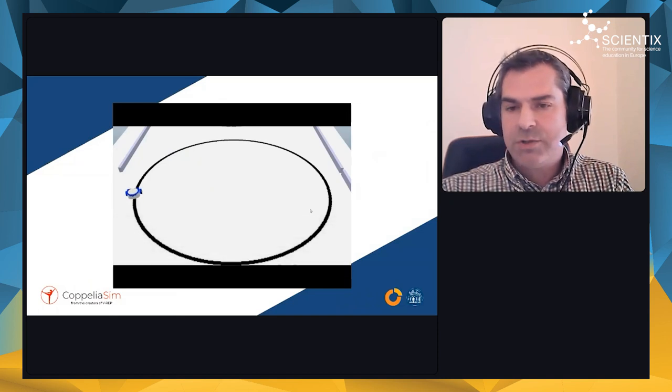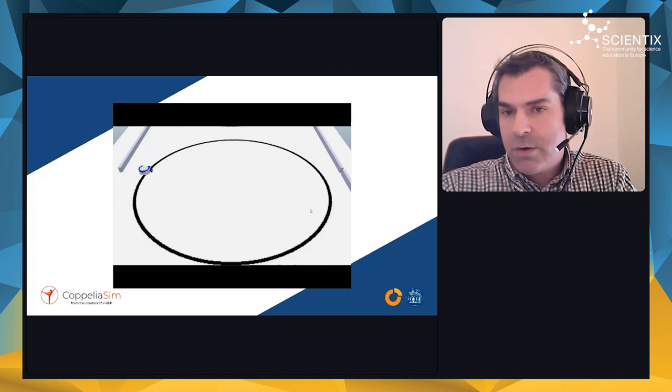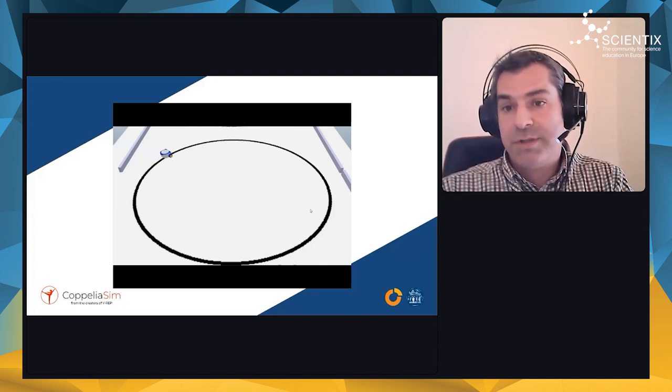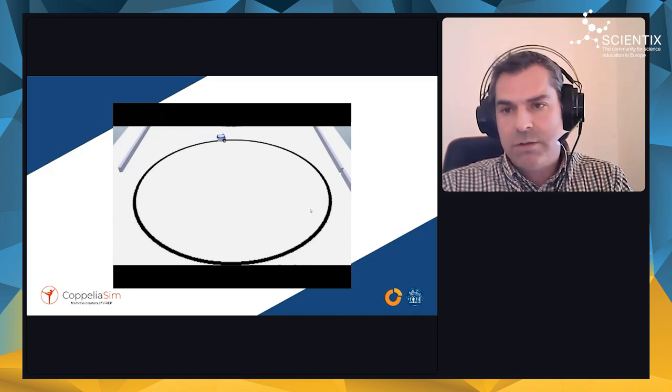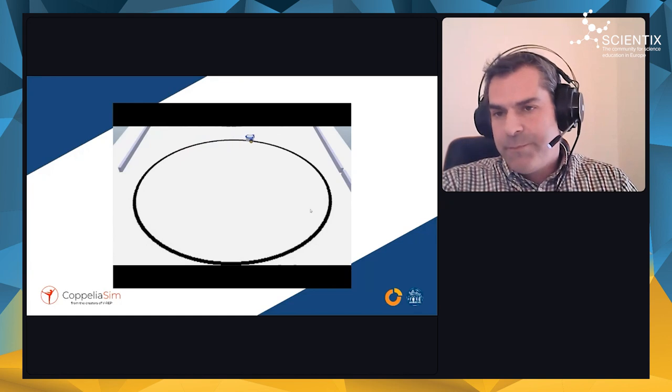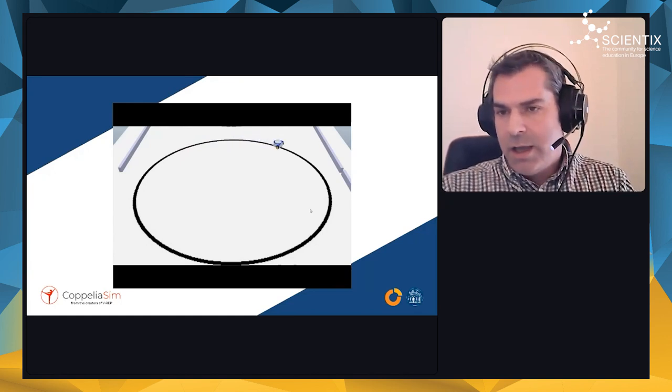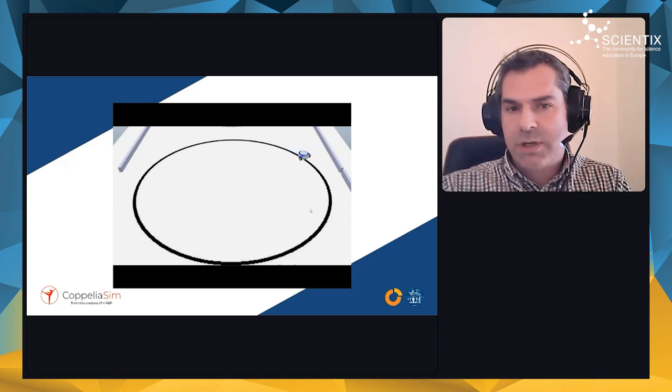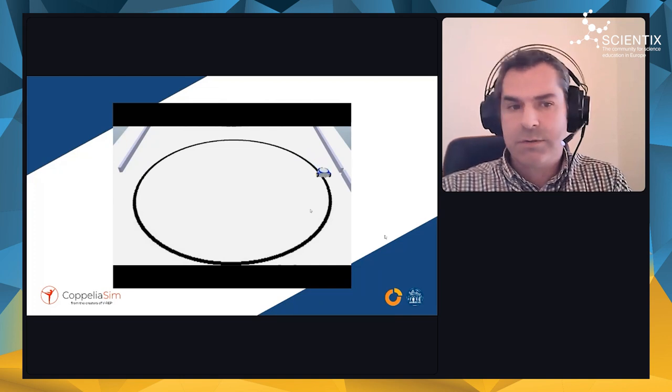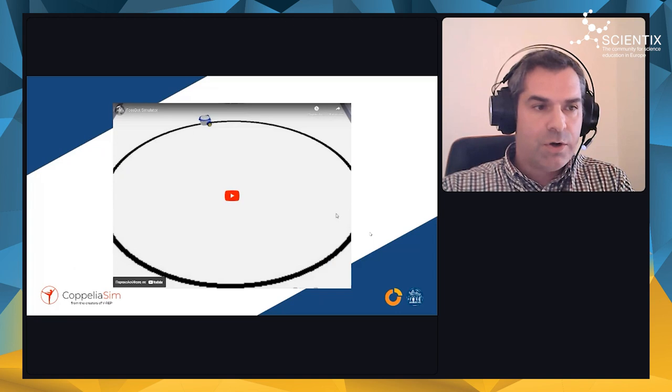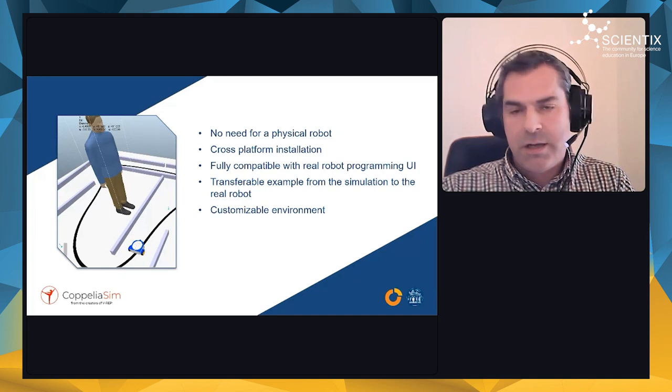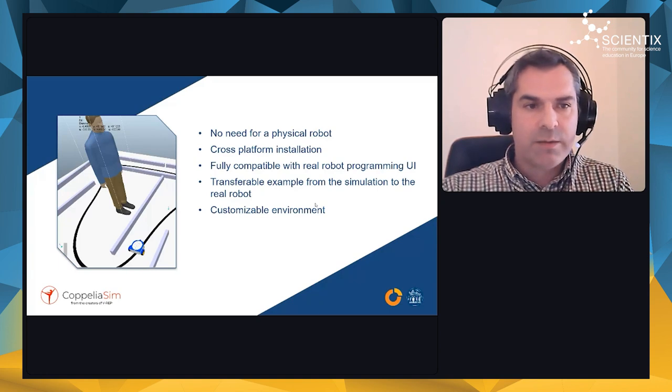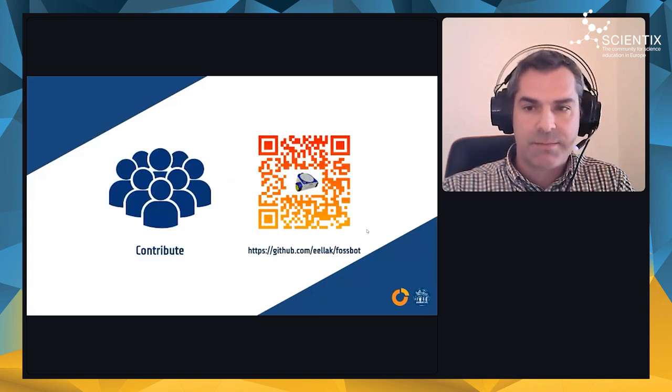This is the same thing but inside the simulator—the line following that we developed with the real robot executed here in the simulation environment. This is a good thing because with a simulator, someone that does not have the ability to print or assemble the robot can work on the simulator and when they are ready they can proceed with building the actual robot, or we can give them access to the actual robot and they can test their scripts directly without needing to change anything. This is a cross-platform installation so we can install everything in any type of operating system and it's fully compatible with the real robot.